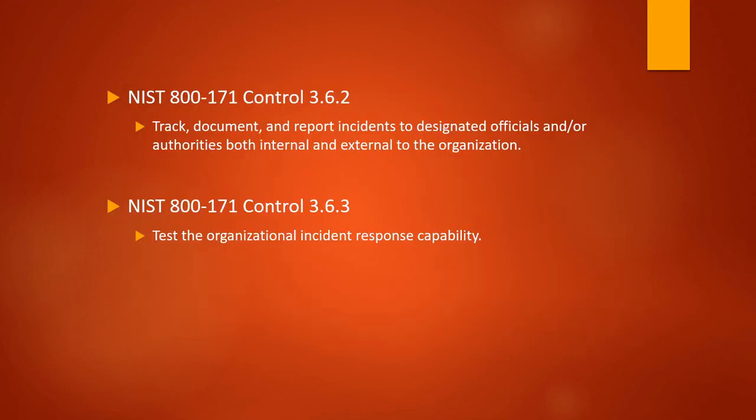I do want to make everyone aware that there are two additional controls within the incident response control family in NIST 800-171. The first one that we have here is to track, document, and report incidents to designated officials and or authorities both internal and external to the organization and this control is pretty much just saying that the organization should have a process to document, report, and track incidents. Now this can be handled by having a proper incident reporting process for internal and external parties but additionally your organization should have something such as an incident response handling form where all details from the incident can be recorded and tracked.